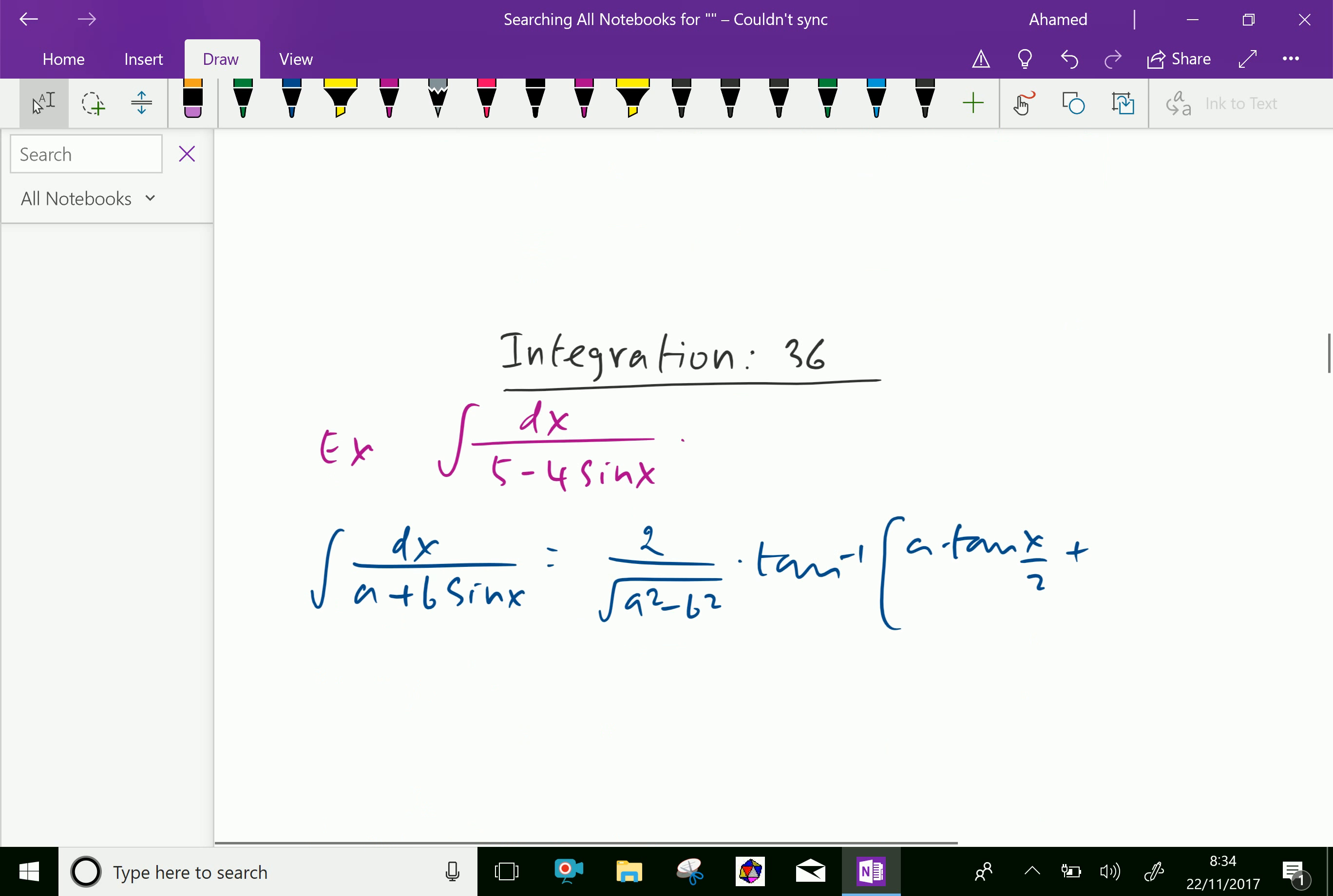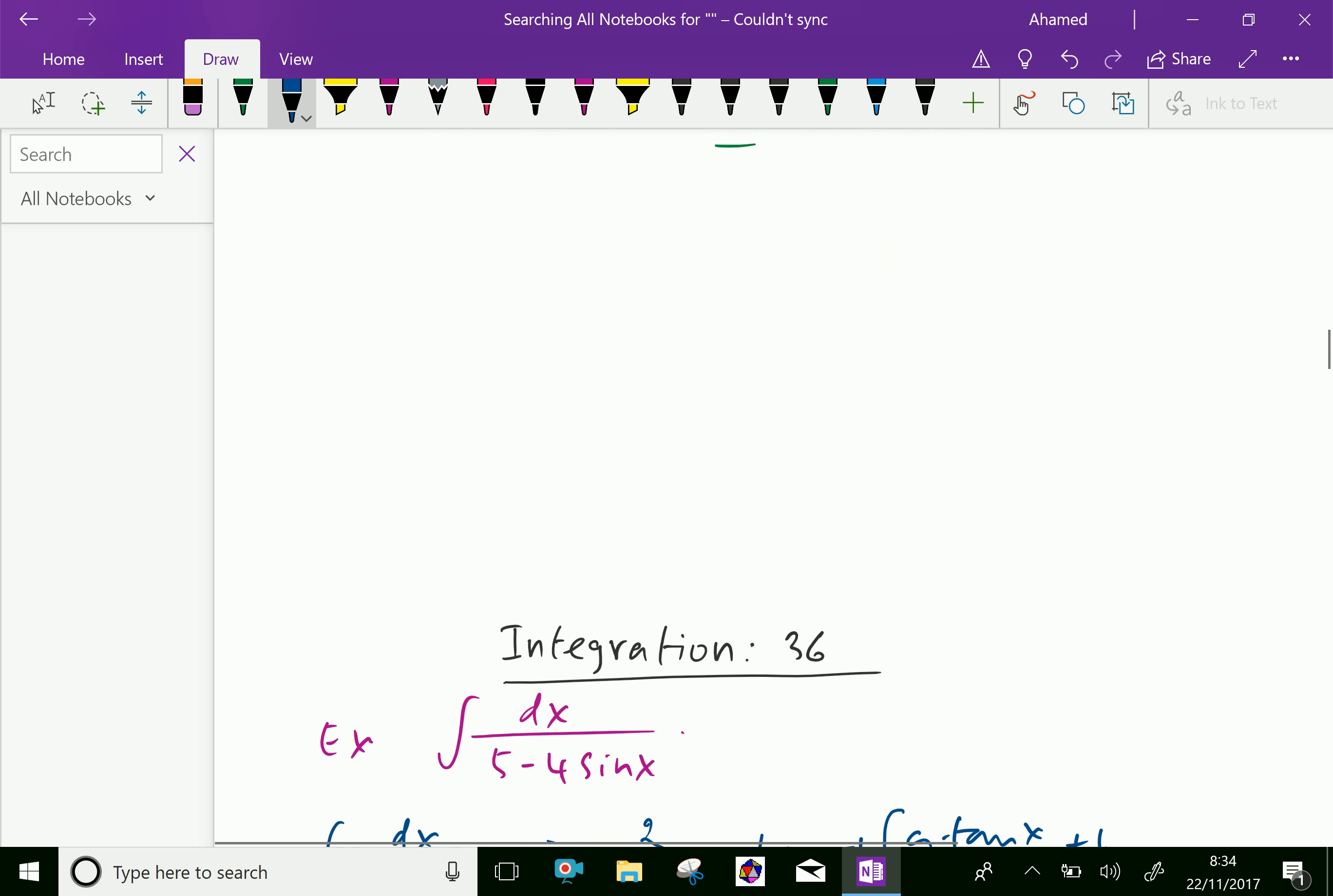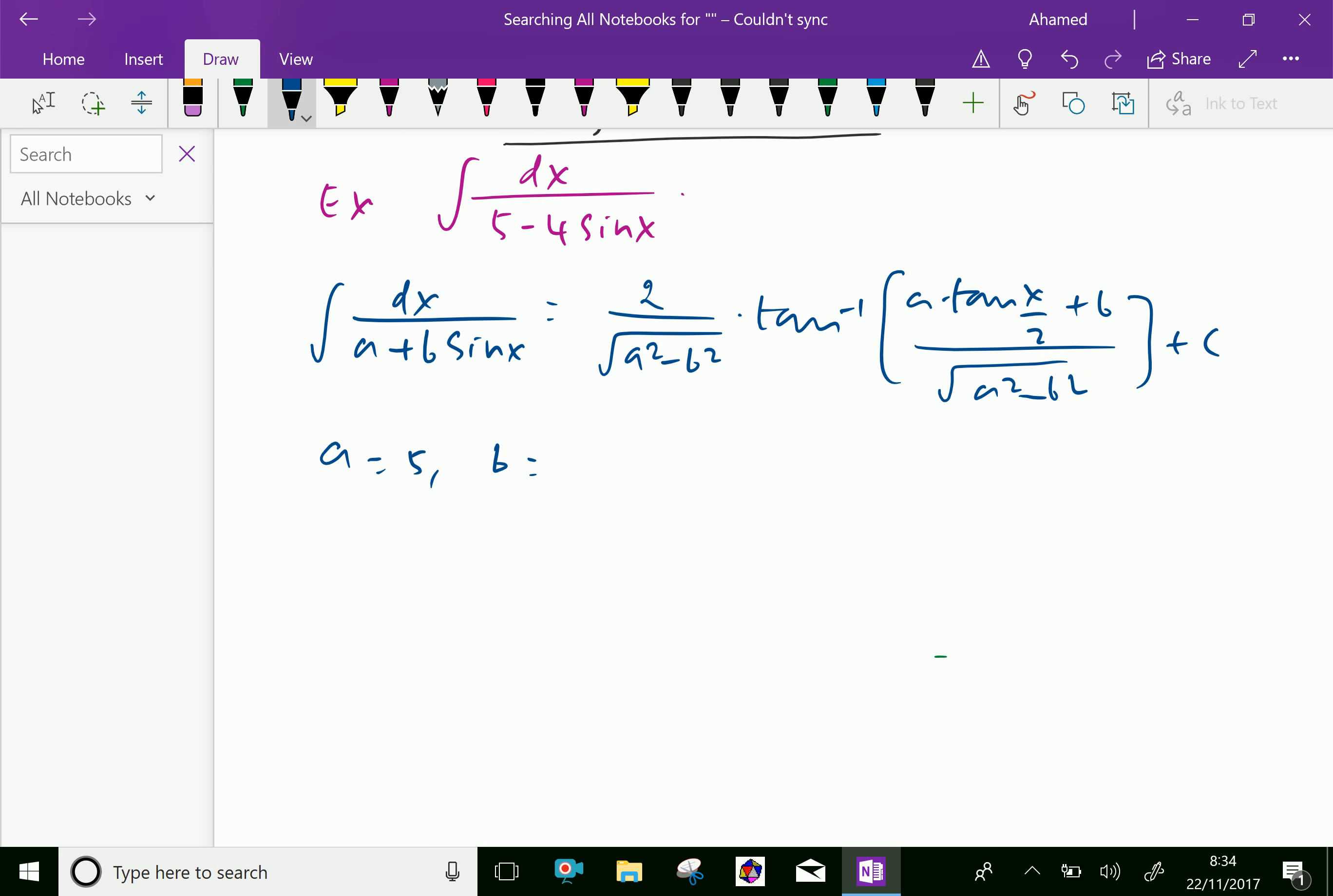plus b over square root of a squared minus b squared. Now, let us apply the values here. First, a equals 5 and b equals minus 4.